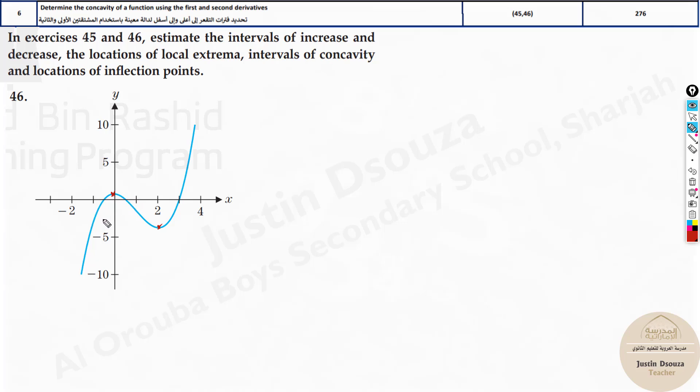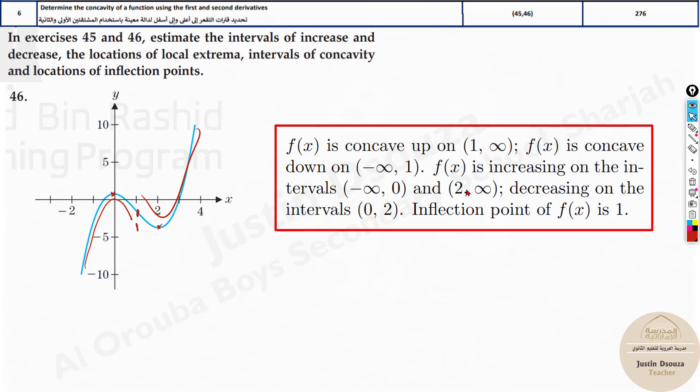Now where would be the inflection points? I can see this is concaving down, this is concaving up. Somewhere in the middle I would consider 1 to be the inflection point. Right side of 1 is concaving up, left is concaving down, and this is what is shown over here.